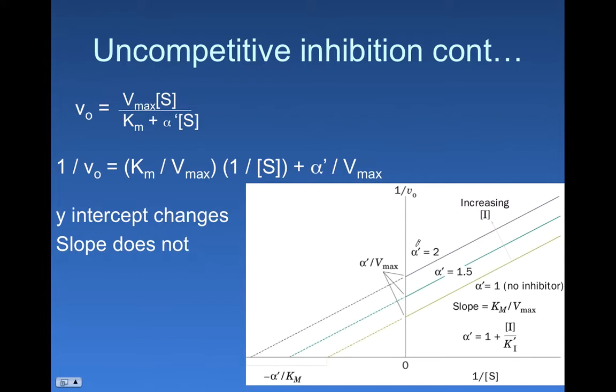And again, you can describe them with alpha values. In this case, an alpha prime value, which describes the amount of deviation from the uninhibited reaction. And again, that alpha prime value can be used to calculate the dissociation constant for a particular inhibitor.